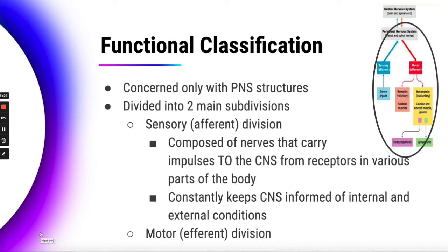The functional classification of the nervous system looks at structures of the peripheral nervous system — your nerves, including cranial nerves and spinal nerves. The peripheral nervous system is divided into two main subdivisions: the sensory division and the motor division. Another name for the sensory division is the afferent division. These are nerves that carry impulses to the central nervous system from different receptors in the body.